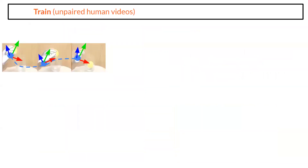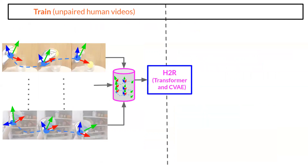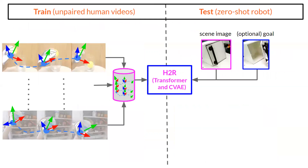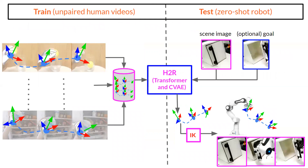This brings us to our approach. For training, we have a large dataset of unpaired human videos, and we extract the hand poses from each frame. We feed this to our model, Human-to-Robot (H2R), which consists of a transformer and CVAE. During testing, given a scene image and optionally a goal image, the model outputs action trajectories that can be mapped to the robot's domain and executed on the robot with an inverse kinematics controller.